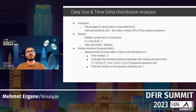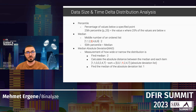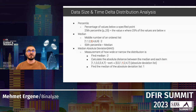As an example: imagine 300 people in a conference room. If you consider everyone's age, order them from youngest to oldest, take the first 25%, and find that person — that person's age is the 25th percentile of the age distribution. The second term is median: the middle number of an ordered list — not the average.